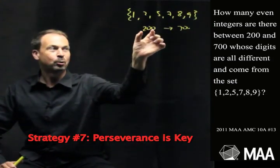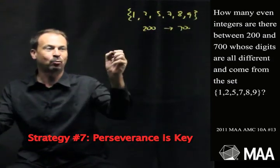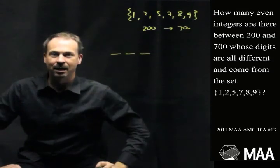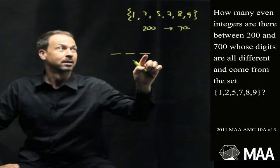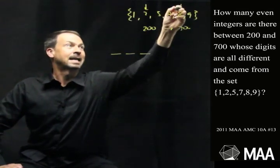First of all, all the numbers are between 200 and 700. So I guess we're looking for three-digit numbers. And they must be even. So it means the last digit better be an even digit. So what have we got to choose from? I guess it's just 2 and 8.